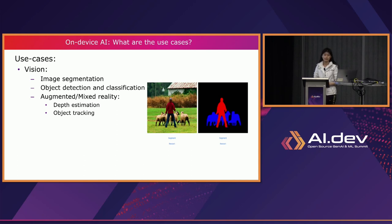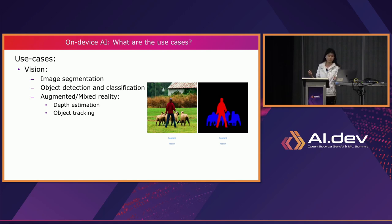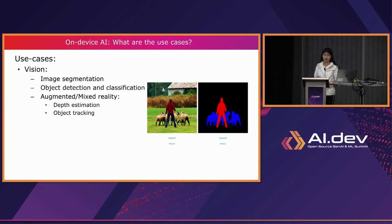For use cases, the vision model category includes some of the most common models: image segmentation, object detection, classification, and augmented reality. Usually the input is an image and the output varies based on the model.